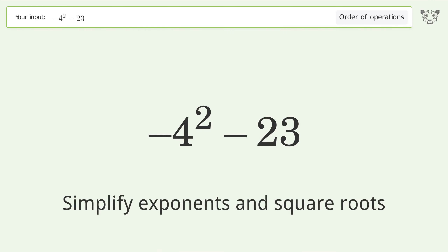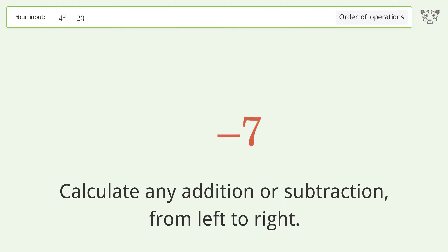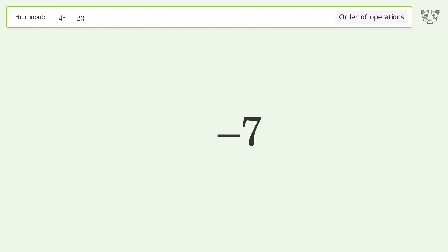First, simplify exponents and square roots: negative 4 to the power of 2 equals 16. Then, calculate addition or subtraction from left to right: 16 minus 23 equals negative 7. And so the final result is negative 7.